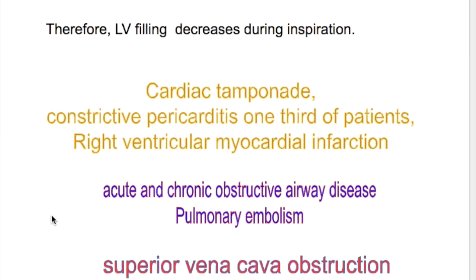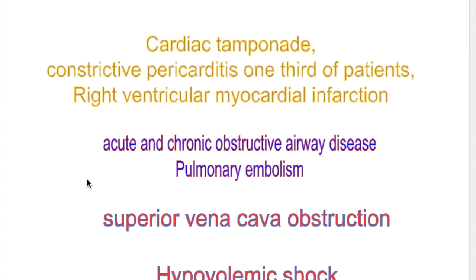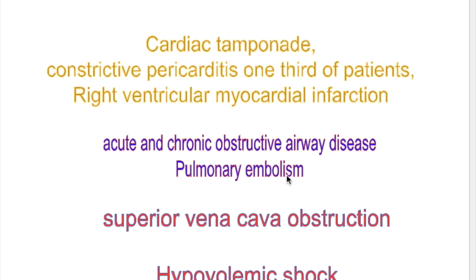What are the causes of pulsus paradoxus? There are cardiac and non-cardiac causes. Cardiac causes include cardiac tamponade, restrictive pericarditis in one-third of patients, and right ventricular myocardial infarction. Non-cardiac causes are pulmonary causes such as acute and chronic obstructive airway diseases like emphysema, asthma, and pulmonary embolism.